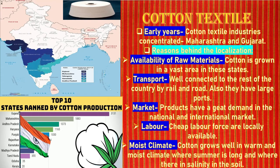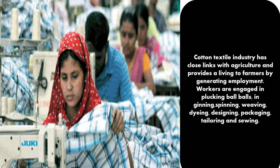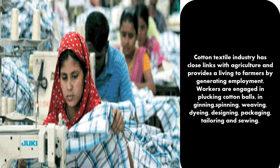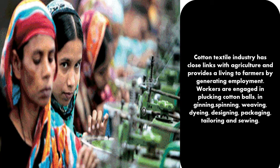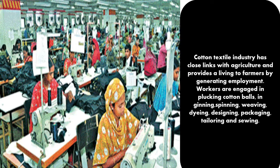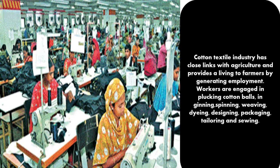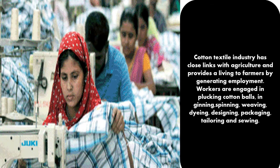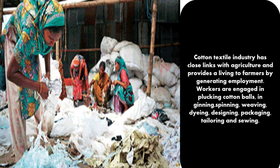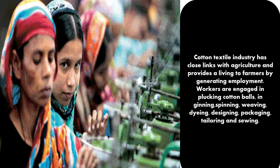The cotton textile industry has close links with agriculture and provides a living to farmers by generating employment. Workers are engaged in plucking cotton balls, which are then sent for ginning — the process of removing seeds from cotton. After ginning, the cotton goes for spinning to make yarn, then weaving to make fabric, then dyeing, coloring, designing, packaging, tailoring, and sewing.